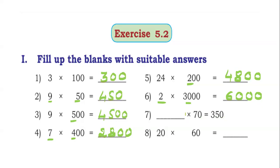350 is the answer. What multiplication comes here? 5. 5 into 70 is 350.